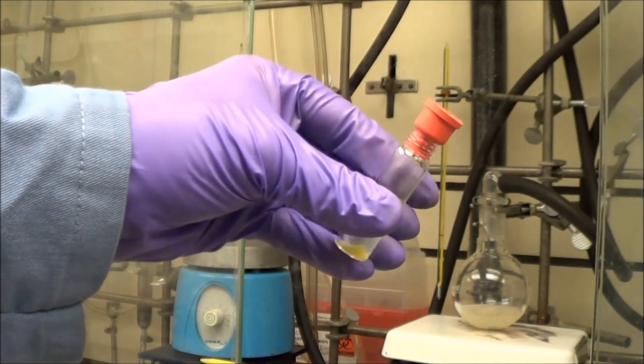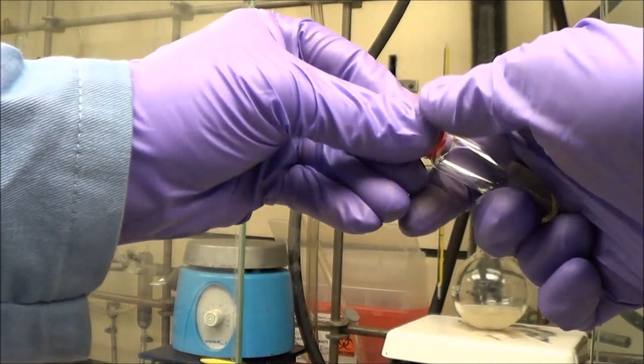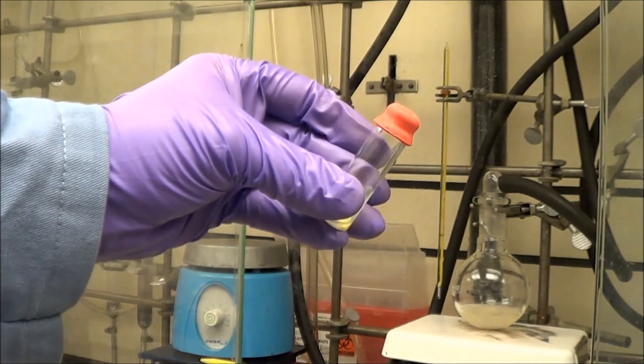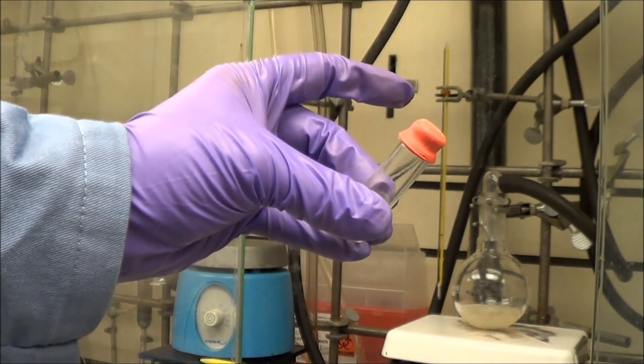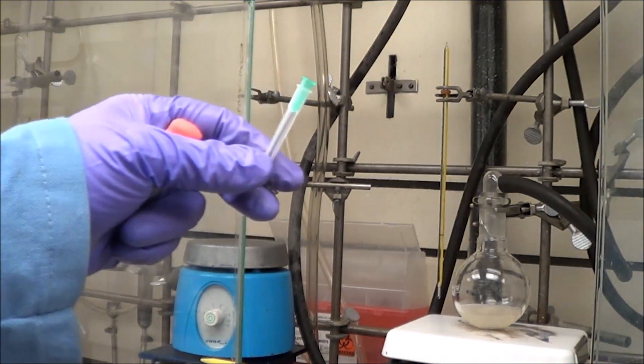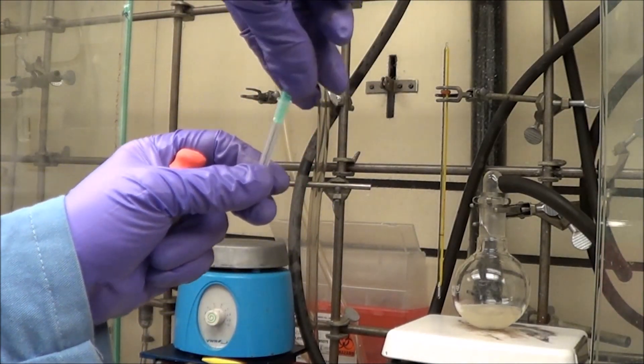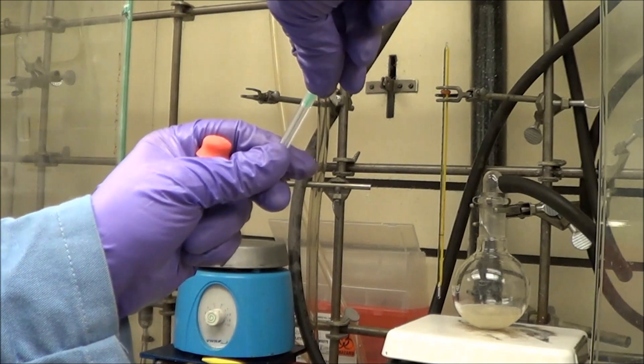We're going to dry it by attaching it to the Schlenk line, and to do so we put on a septa cap first. It's a little hard to get on there, but it's important because then I know it has a good seal. The harder it is to get on, the better. We're going to use a 21-gauge green needle to puncture the septa and attach it to the Schlenk line.